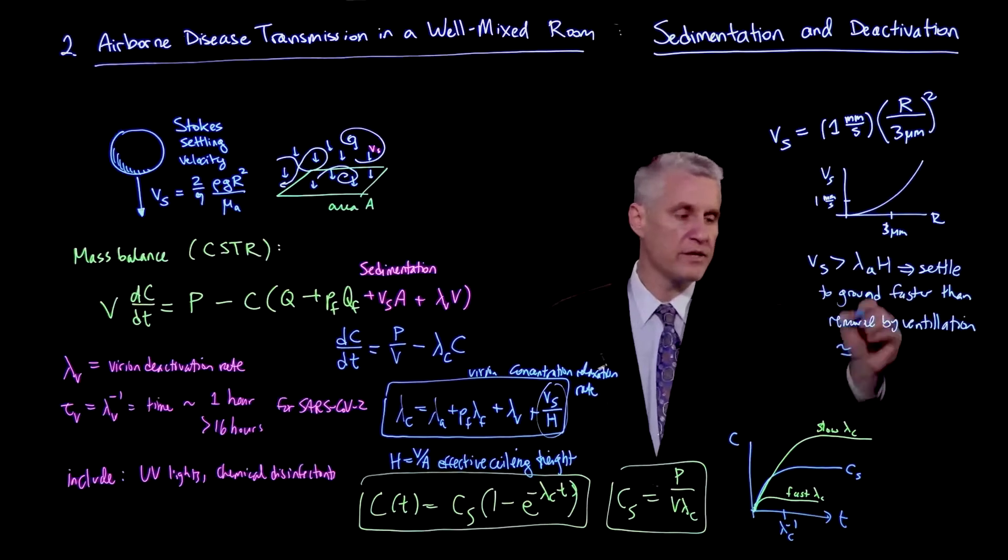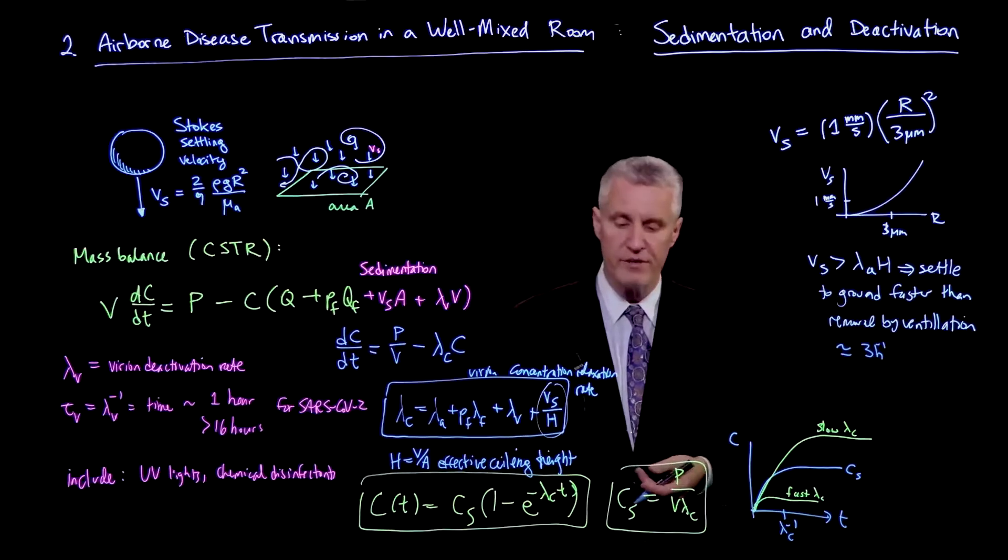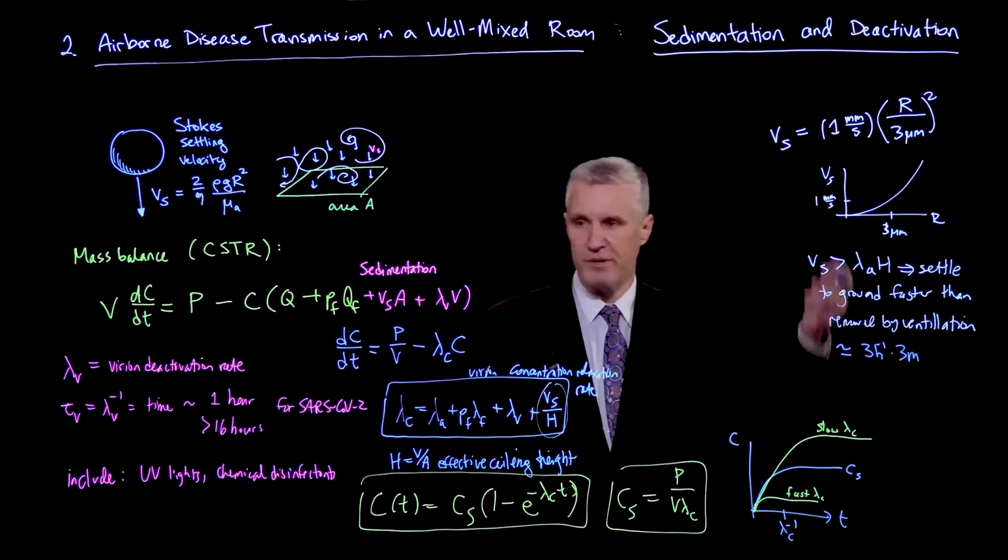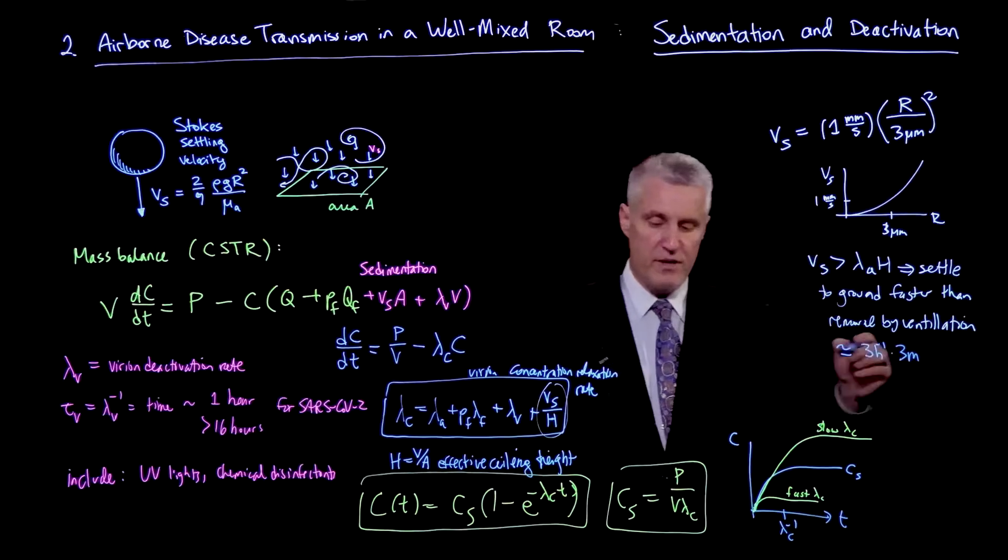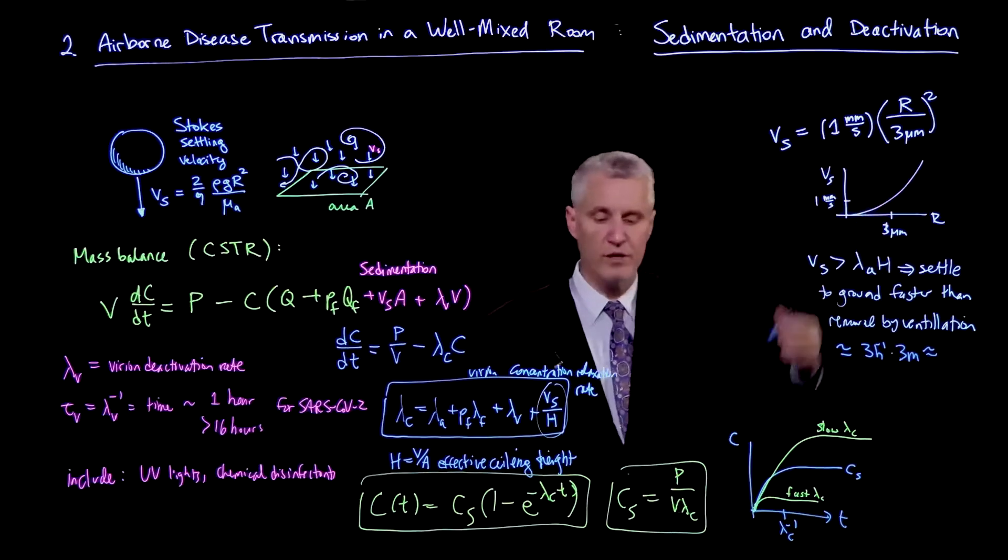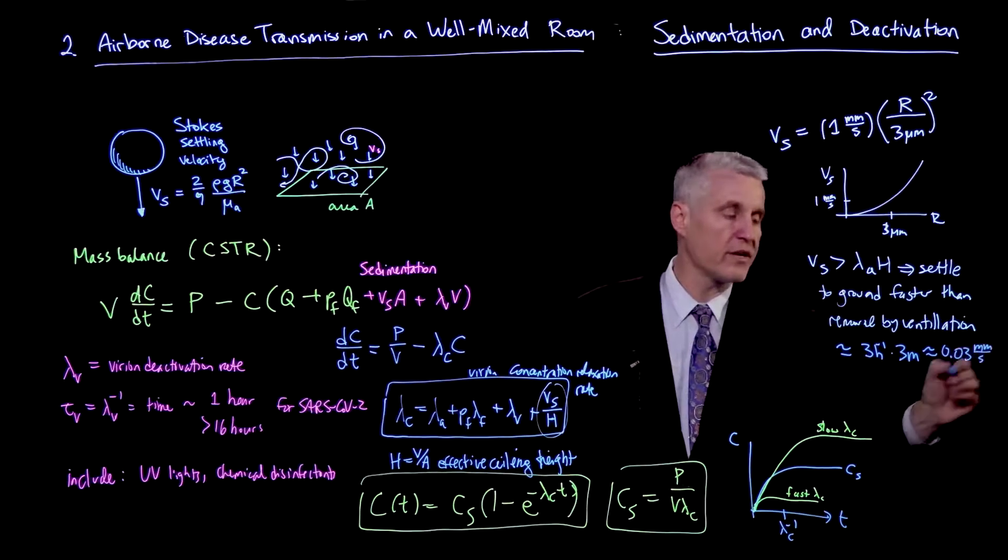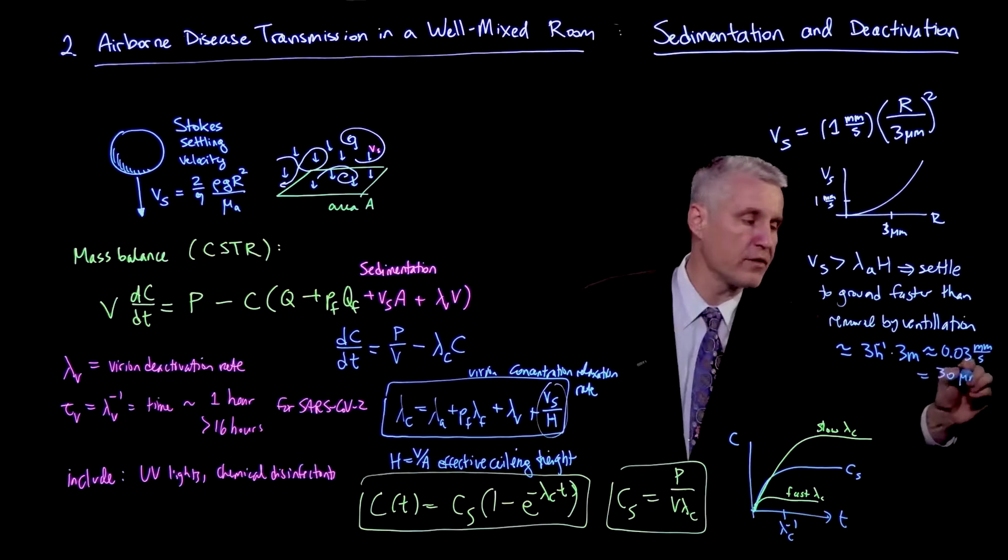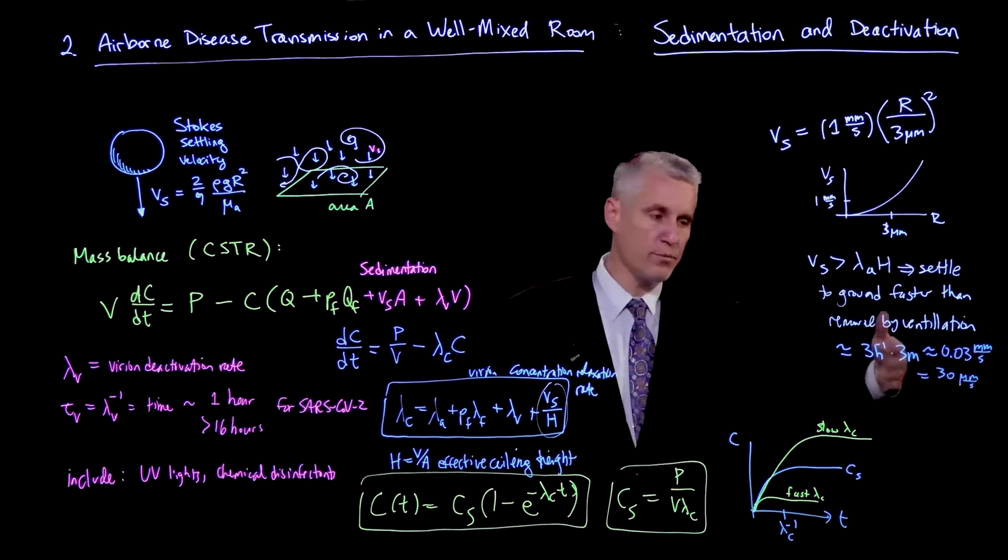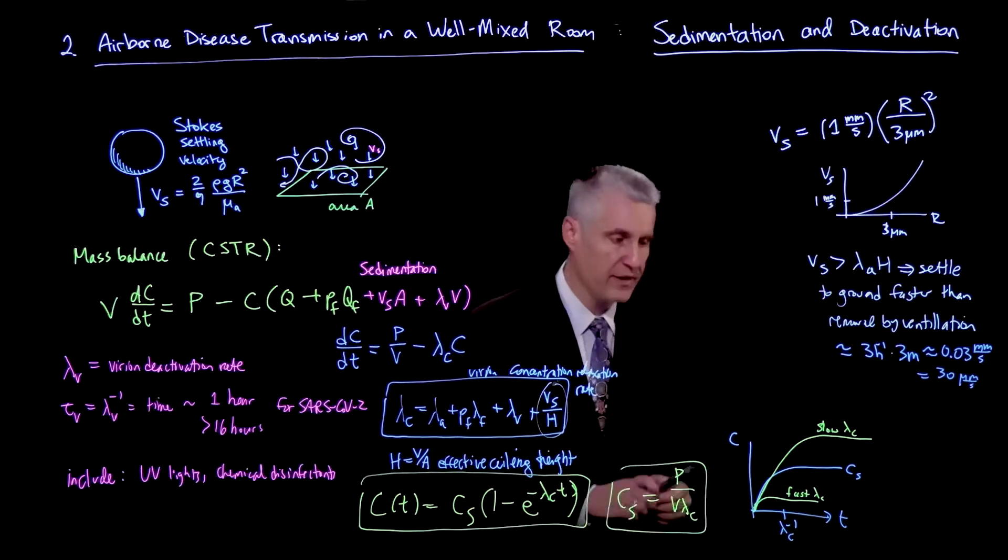And so if we just want to estimate what kind of size are we talking about here, if we pick a lambda_a, which is 3 inverse hours, so 3 ACH, that's a typical kind of moderate ventilation rate. And we take a typical room size, which maybe is something like 3 meters. It's maybe not quite that high, but maybe it's only 1 or 2 meters. But I'm just trying to get an overall sense here. When I plug that in, I'm left with 0.03 millimeters per second, which can also be written as 30 microns per second.